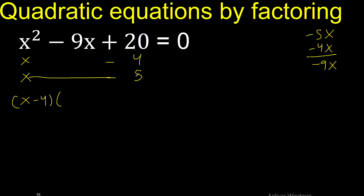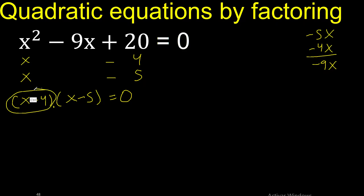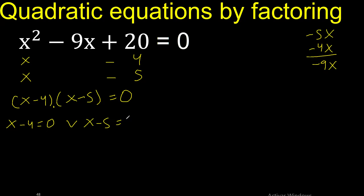Like this, equal to 0. By multiplication, therefore this factor equals 0, or this factor equals 0.